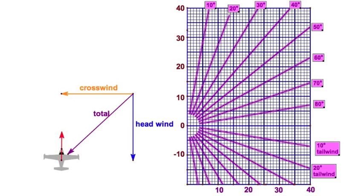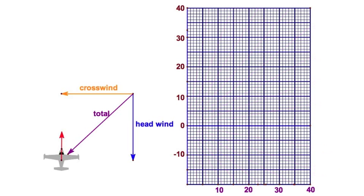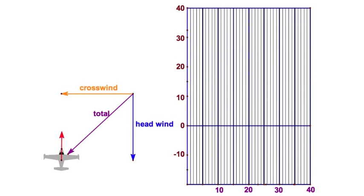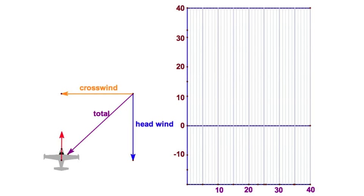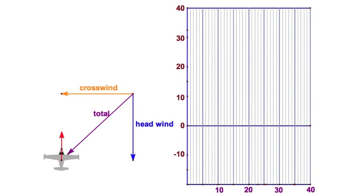I've got these rays, radials it looks like, and those represent the angle of the wind. I've got these horizontal lines, and those are the headwind component, or tailwind, and these vertical are the crosswind components.